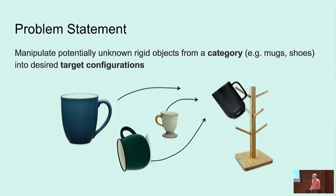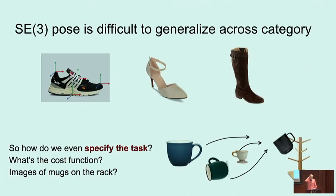Here's a problem statement: manipulate potentially unknown rigid objects from a category — like mugs or shoes — into some desired target configurations. Traditionally in robotics we think about estimating the pose, the canonical Lagrangian state of the system — position, orientation in space. But that doesn't really work if you're trying to write the same controller for a whole family of objects. What's the pose of the shoe when the shoe could be a tennis shoe, a high heel, or a boot? Somehow the pose is no longer a meaningful measure. So how do we specify the task? What cost function should we write?